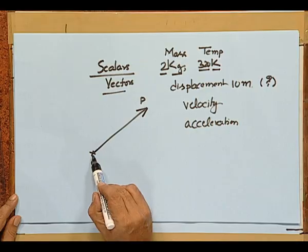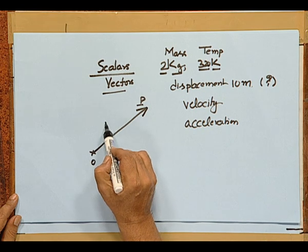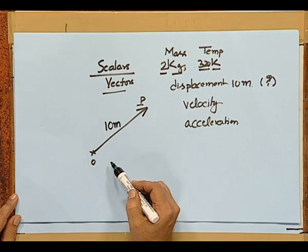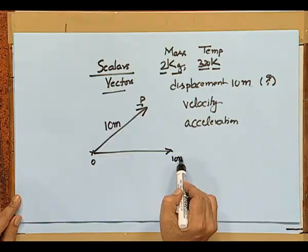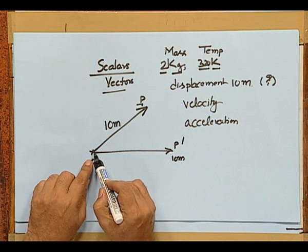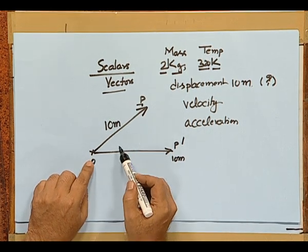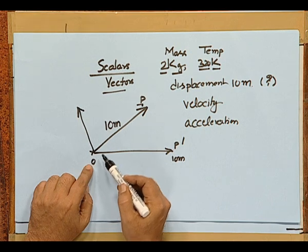To illustrate, consider the figure I have drawn here. With reference to point O, point P is in a certain location — at a certain distance, let us say 10 meters. If I say P is located at a distance of 10 meters, I am not very sure whether I have really specified the location of P. 10 meters could be in a different direction — let us call it P dash. If I say go from O, 10 meters, without specifying direction, you may not reach that point at all.